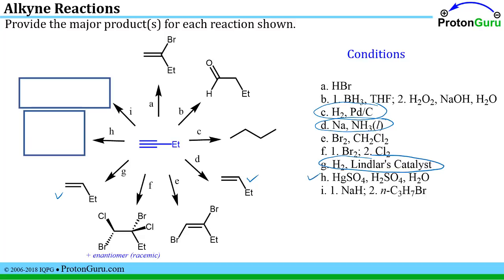Now we have reaction H. We see the mercury. We say, okay, we're going to add across the pi bond, Markovnikov addition of an OH and an H. But now you see we have an OH on a carbon-carbon double bond. In which case it's going to undergo tautomerization and move the double bond to the O. So that is our expected product.